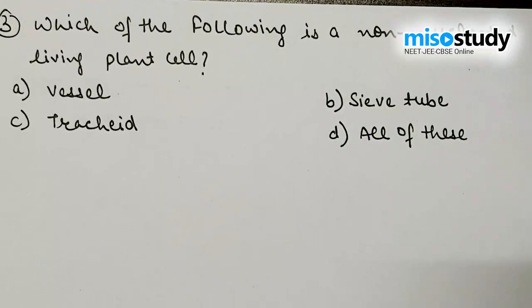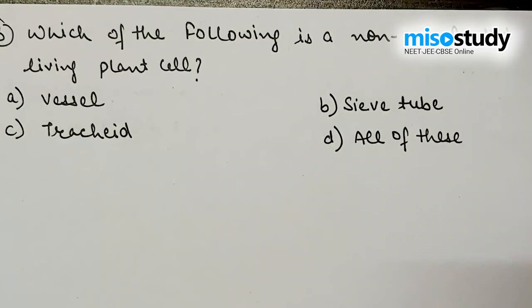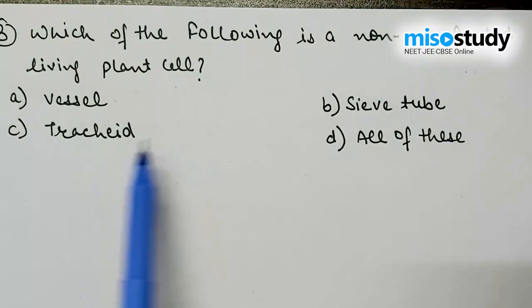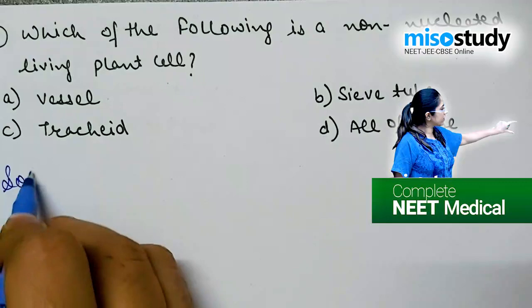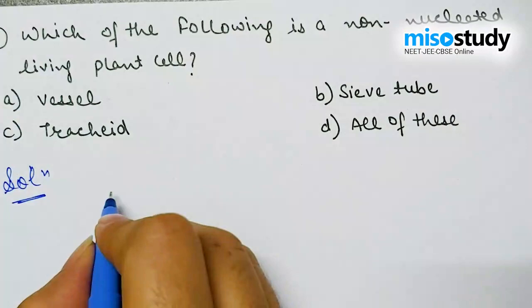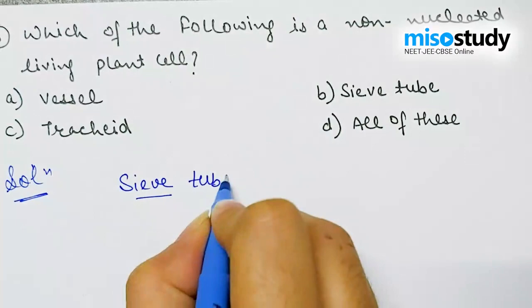The next question from anatomy of flowering plants is: which of the following is a non-nucleated living plant cell? Option A: vessel; Option B: sieve tube; Option C: tracheid; Option D: all of these. As discussed in the prior question, sieve tubes are elongated tubular conducting channels.